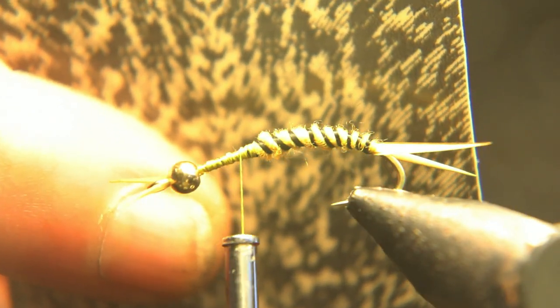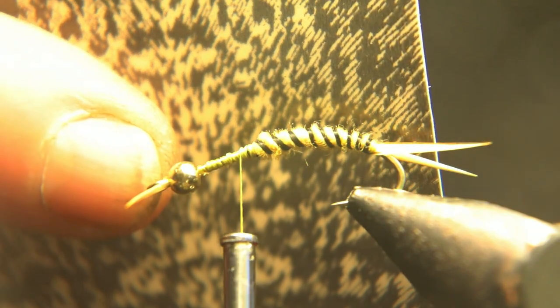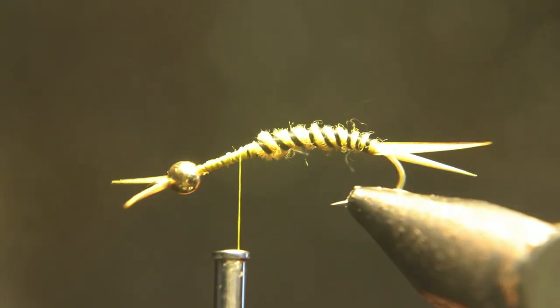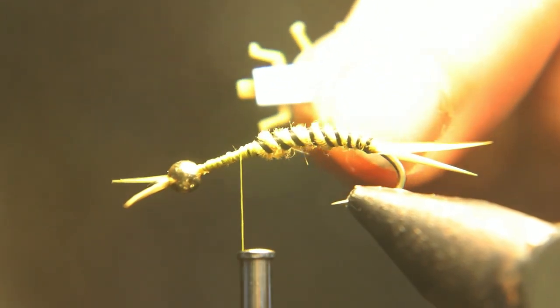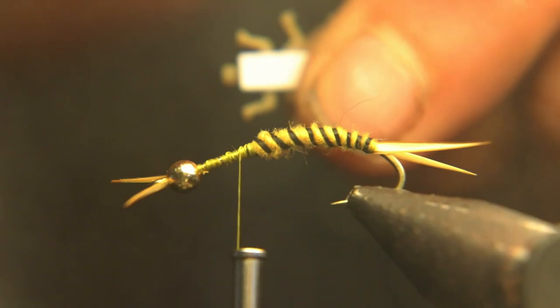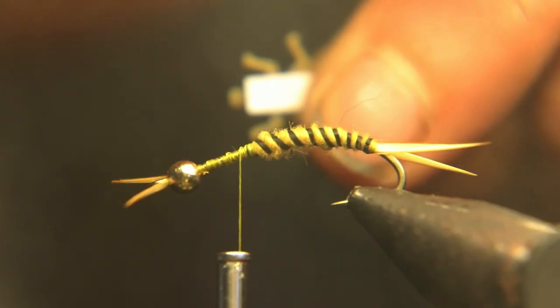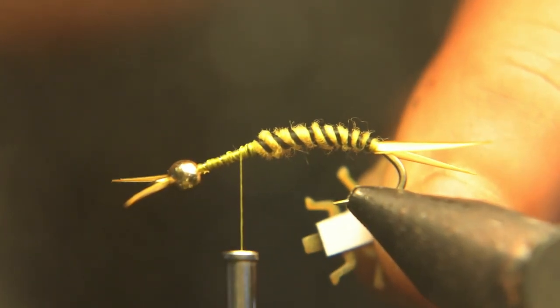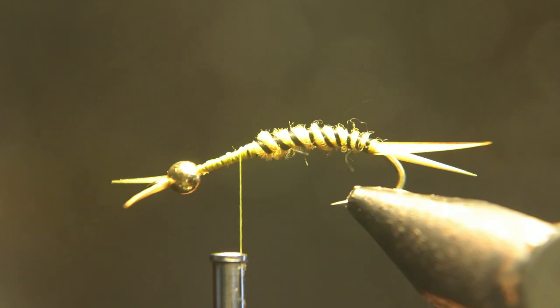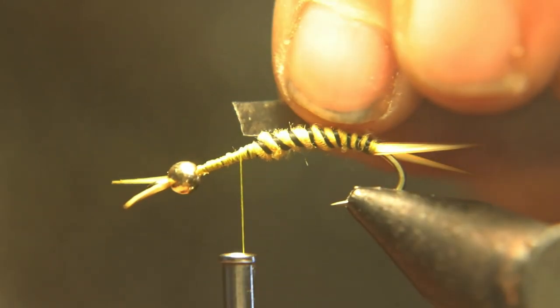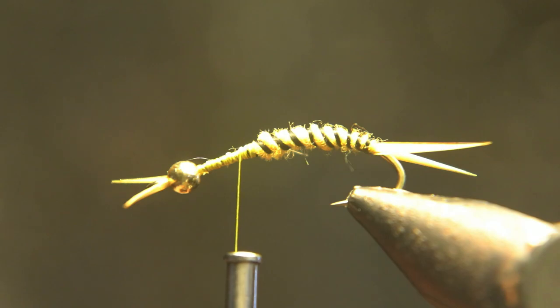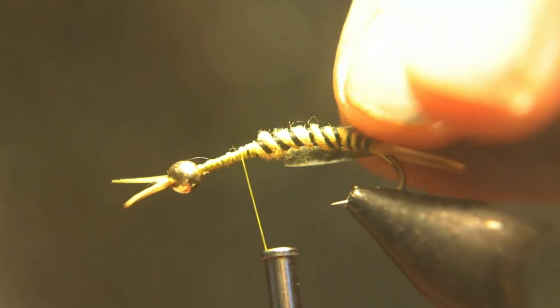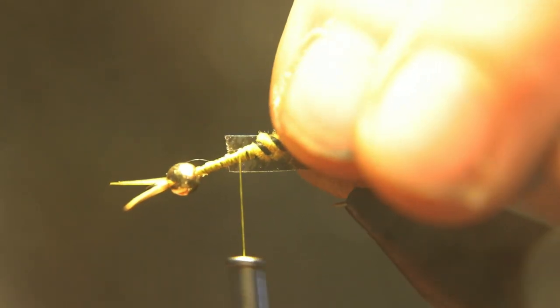So we got nymph skin here. I got a set, Blue Heron variety pack. It came with sowbug skin and all different kinds of nymph skin. I like this pattern for the stone fly. You cut it, I have it measured actually. You measure it so it fits between the legs, and then you want to remove the paper and always tie the dull side up because you're going to fold it over, and then the shiny side will be up.